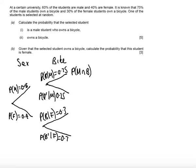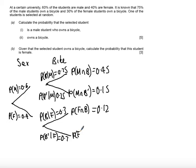Then finally, just finish off by doing the end probabilities. Probability of male and a bike: 0.6 times 0.75 is 0.45. Probability of male and not owning a bike: 0.6 times 0.25 gives me 0.15.